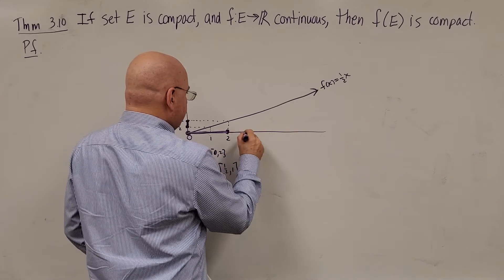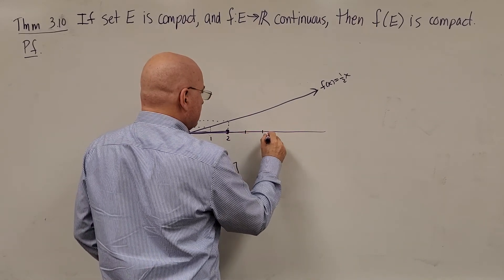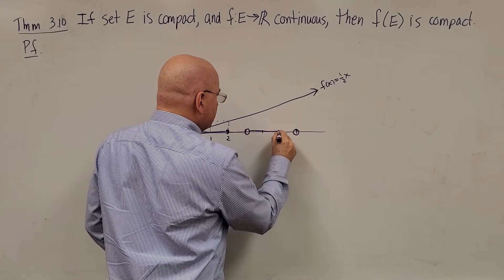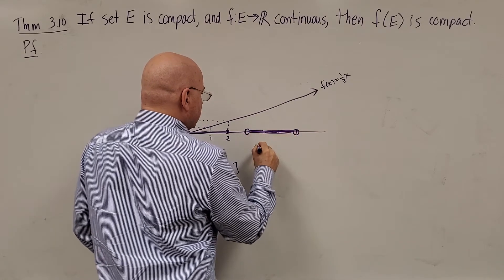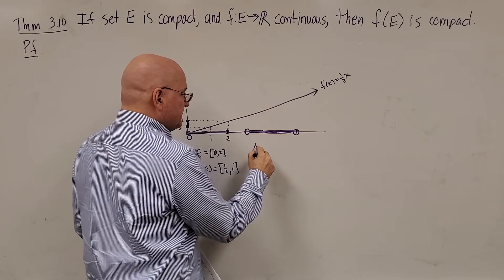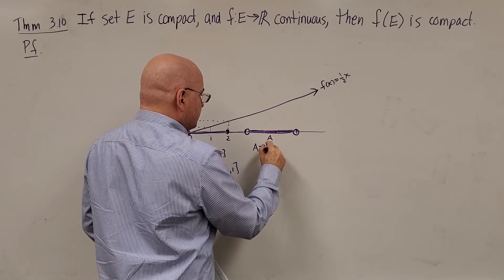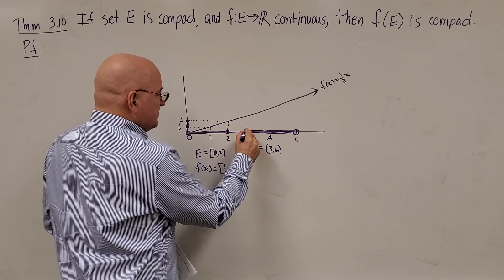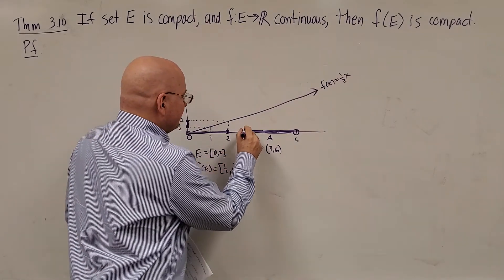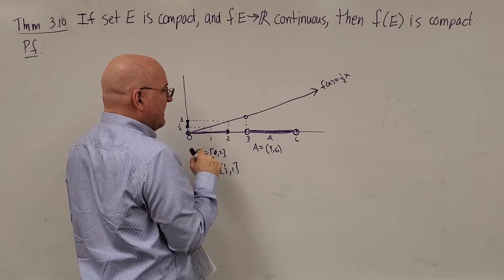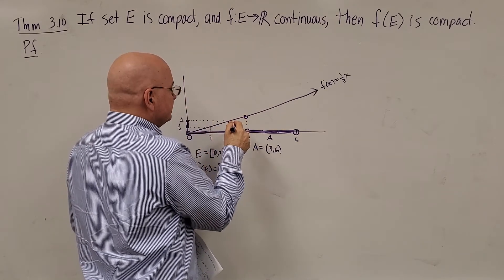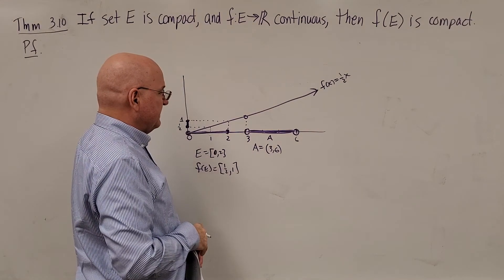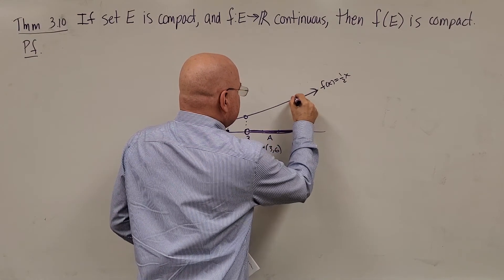Now let's try open intervals. Let's go from 3 to 6 and say that the domain region is a set E equal to the open interval (3, 6). Well, we can't take F(3) — it's not defined there; the set E doesn't include the number 3, and the set E does not include 6.